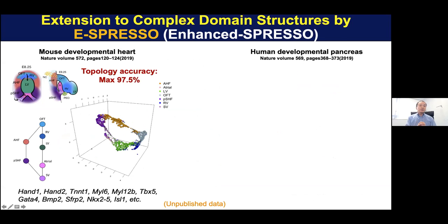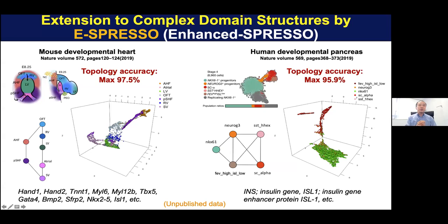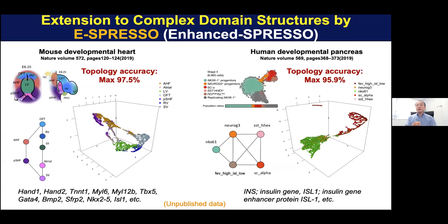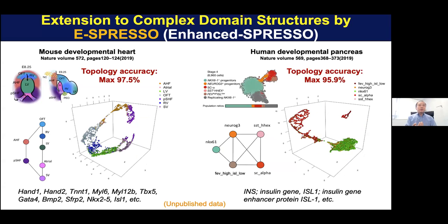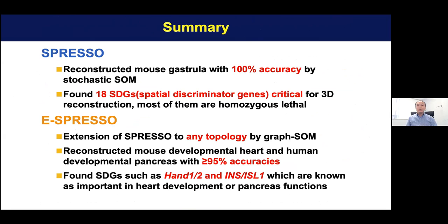Even more surprisingly, we successfully extracted HAND1, HAND2, and other genes related to mouse developmental heart, as well as insulin-related genes which are very important for pancreas function. In summary, in our previous version E-SPRESSO gives 100% accuracy and we successfully identified 18 SDGs (special discriminator genes). Now extending to the new version of E-SPRESSO, it still gives very high accuracy and we have successfully identified important genes for mouse heart and human pancreas.